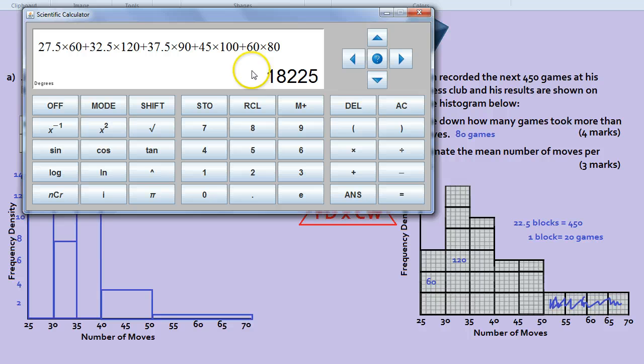Then press equals and you get the vast big total. But remember, for estimating the mean, you need to divide by how many people there are, or the total frequency. So we need to divide this by 450. And our answer becomes 40.5.